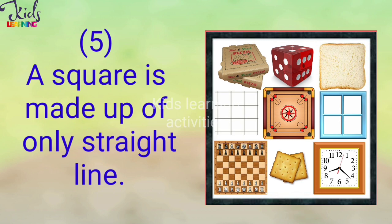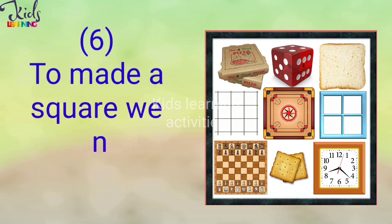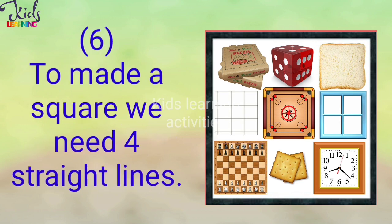A square is made up of only straight lines. To make a square, we need four straight lines.